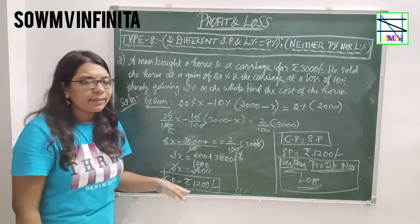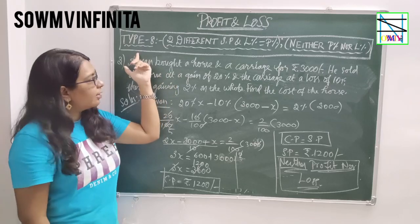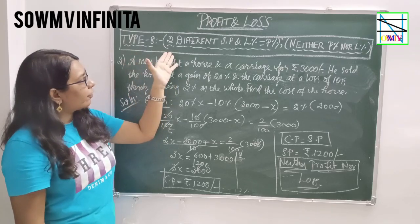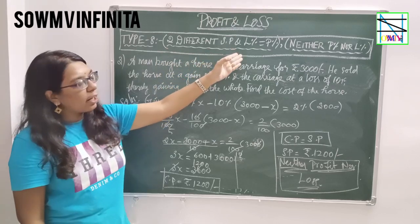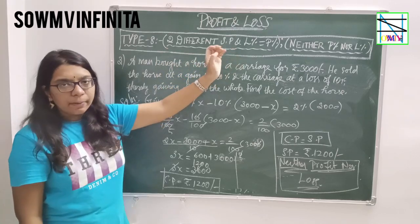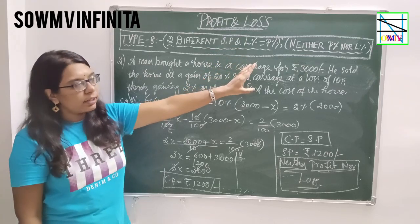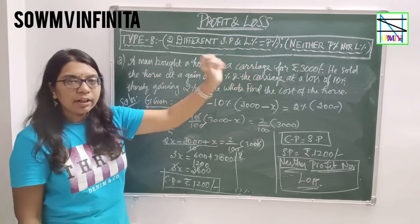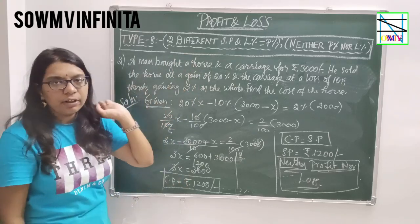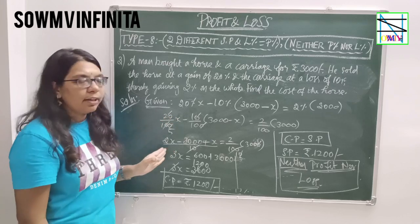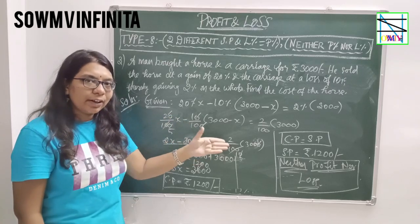You can practice this. These are three problems related to Type 8. The two conditions covered are: two different selling prices where loss percent equals profit percent, and neither profit nor loss, meaning CP equals SP (selling price equals cost price).